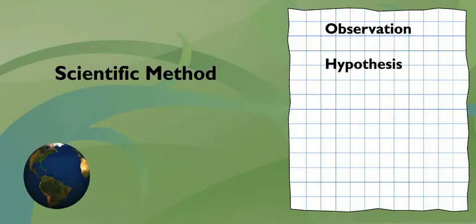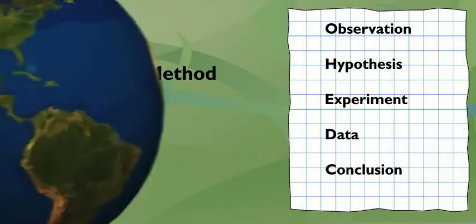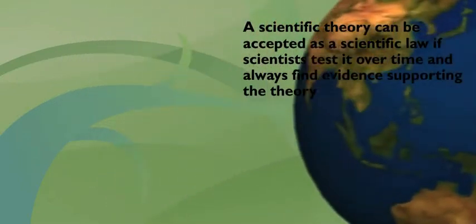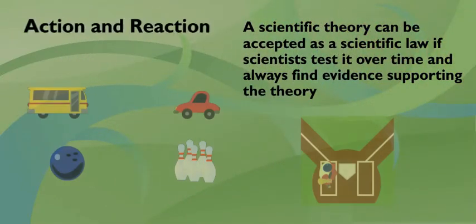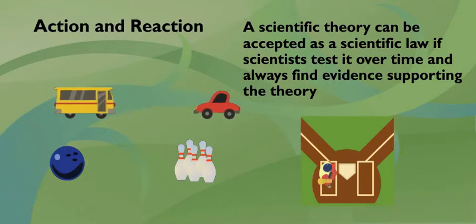That's what the scientific method is all about. Gathering evidence and doing experiments to test theories. To prove they're wrong? Well, to see if the evidence supports each theory. What's most important is that the observations and experiments are accurate.